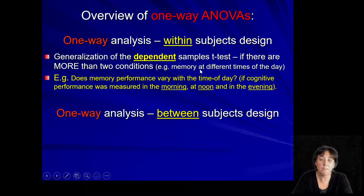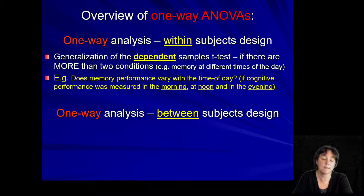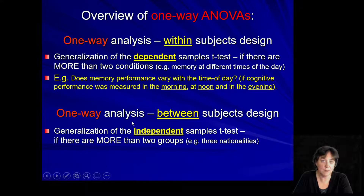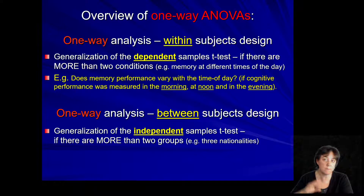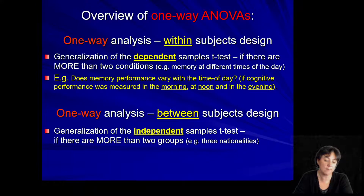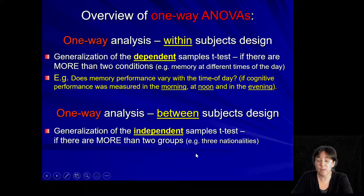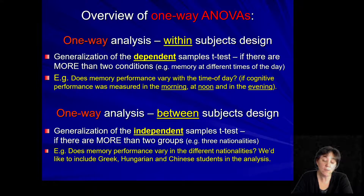For example, the different times of the day — if we're doing morning, midday, and evening testing — that is a within-subjects design. The between-subjects design, on the other hand, requires the database to have separate groups arranged below each other. For example, the three nationalities — Hungarians, Greeks, and Chinese — could be a good example of the between-subjects one-way ANOVA.